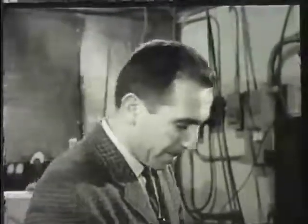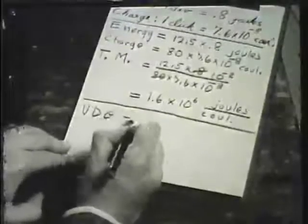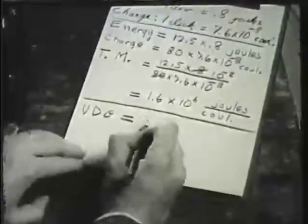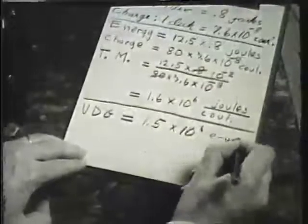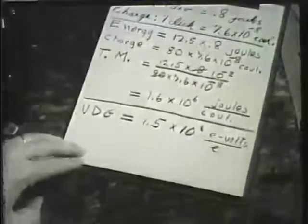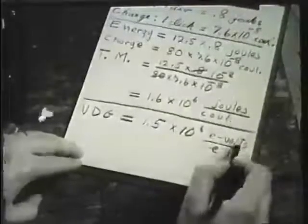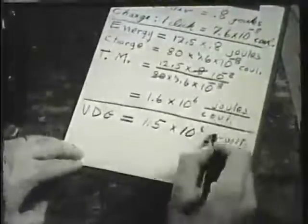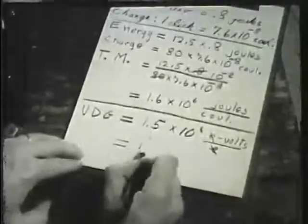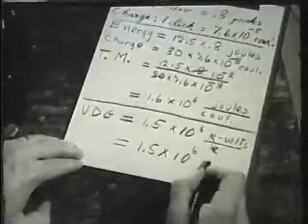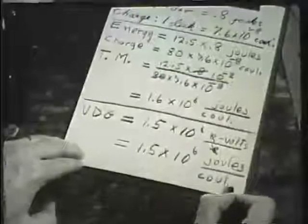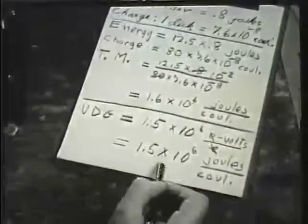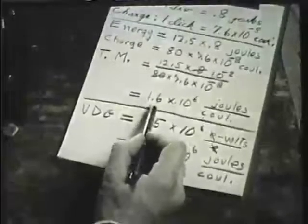According to our thermal measurement, the energy per charge of the electrons is 12.5 times 0.8 divided by 80 times 7.6 times 10 to the minus 8, giving about 1.6 times 10 to the 6th joules per coulomb. According to the voltage reading of the Van de Graaff, the energy of the electrons was 1.5 times 10 to the 6th electron volts per electron. Since 1 volt is the same as a joule per coulomb, this is 1.5 times 10 to the 6th joules per coulomb — which, as close as we can measure, agrees with our direct thermal measurement.